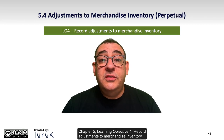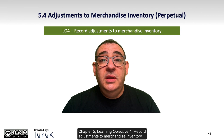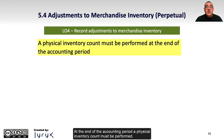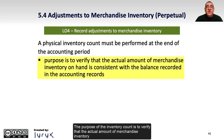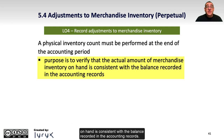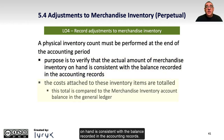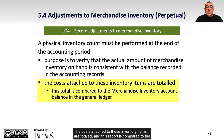Chapter 5 Learning Objective 4: Record Adjustments to Merchandise Inventory. At the end of the accounting period, a physical inventory count must be performed. The purpose of the inventory count is to verify that the actual amount of merchandise inventory on hand is consistent with the balance recorded in the accounting records. The costs attached to these inventory items are totaled, and this report is compared to the merchandise inventory account balance in the general ledger.